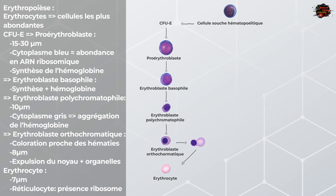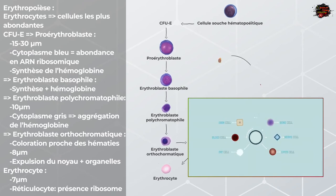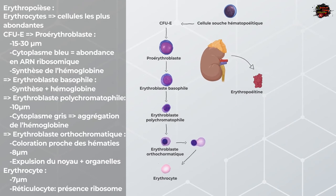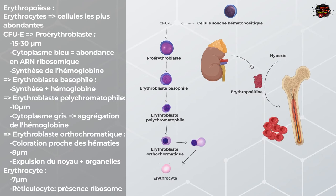Toutes les cellules du sang émanent d'un seul ancêtre cellulaire : les cellules souches hématopoïétiques. Ce qui oriente les cellules souches hématopoïétiques vers la lignée des érythrocytes est une glycoprotéine, l'érythropoïétine, produite par les reins. Sa sécrétion est accentuée en cas d'hypoxie. Cela est logique car une hypoxie est perçue comme une incapacité à capter assez d'oxygène. Donc pour capter plus d'oxygène, il nous faut plus d'hémoglobine, et afin d'avoir plus d'hémoglobine, il nous faudra plus de globules rouges.